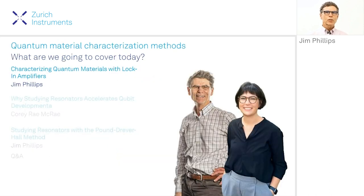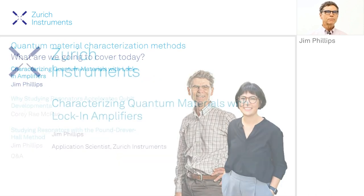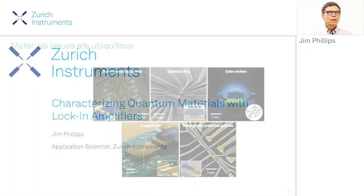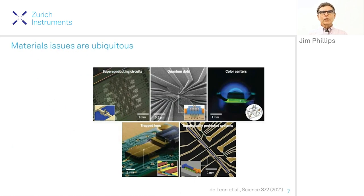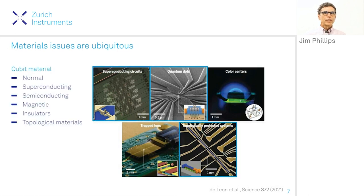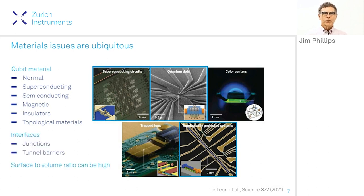Now we're going to talk about the transport measurements. When we want to build qubits — superconducting, quantum dots, and so on — we need many different materials: normal metals, superconductors, semiconductors, and insulators. We have to be concerned with interfaces and surfaces. These structures are small and planar, so the surface may have an outsized role.